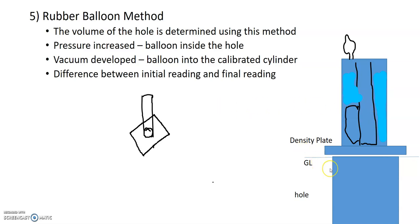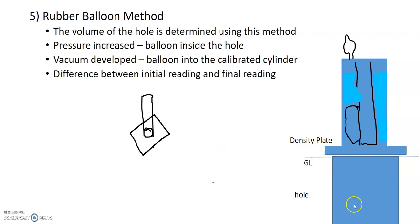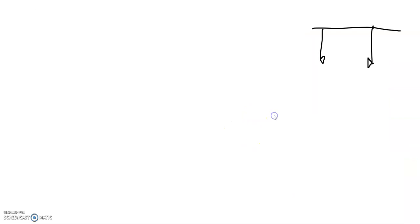The initial reading is taken before the hole is dug. The balloon fills the hole, and the final reading is taken from the calibrated cylinder. The volume of the hole equals the final reading minus the initial reading — that is, the volume of water displaced equals the volume of the hole. The bulk mass density is then found by dividing the mass of the excavated soil by the volume of the hole.